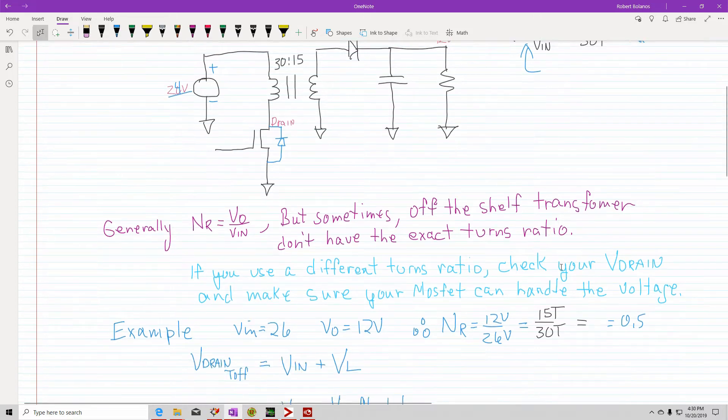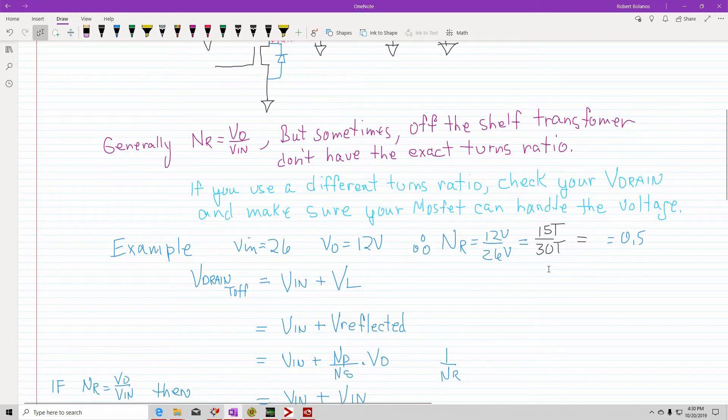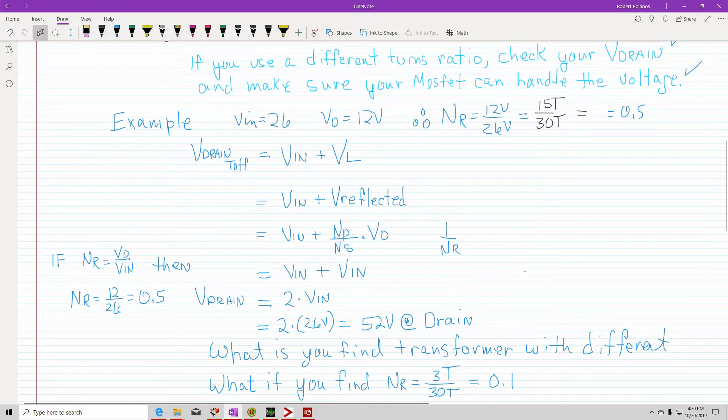So generally if you use this equation but you have an off-the-shelf transformer and you don't have the exact turns ratio, and if you have a transformer with a different turns ratio, you need to check your drain voltage. Make sure that your MOSFET can handle that. So let's go ahead and use this example that we're going to be using.